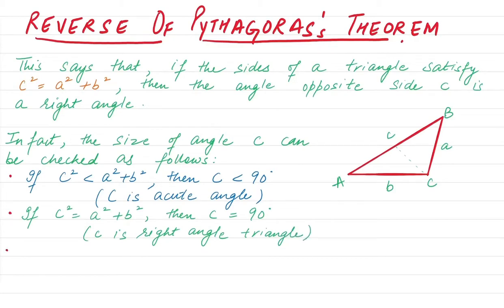If C squared, the longest side or hypotenuse squared, is greater than A² + B², then C will be greater than 90 degrees. Therefore, C is an obtuse angle. An angle which is greater than 90 degrees is called an obtuse angle.